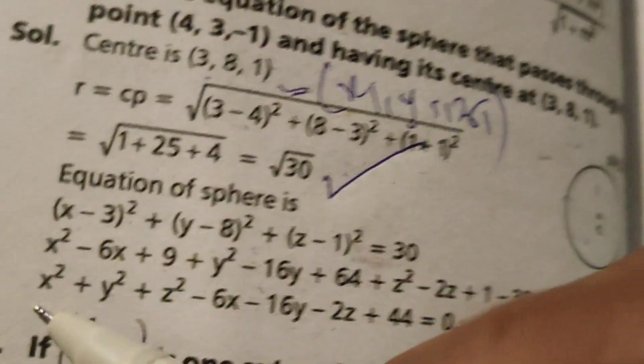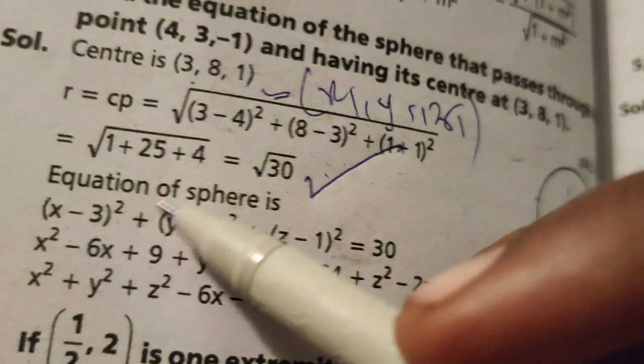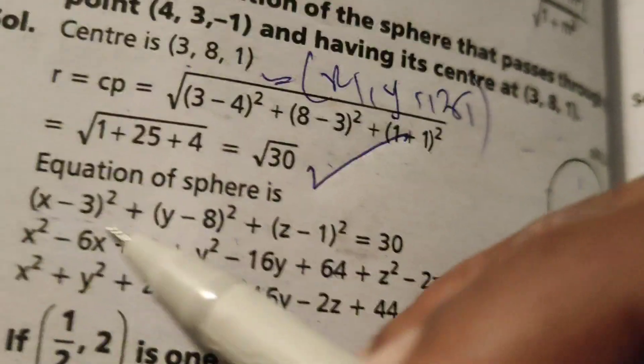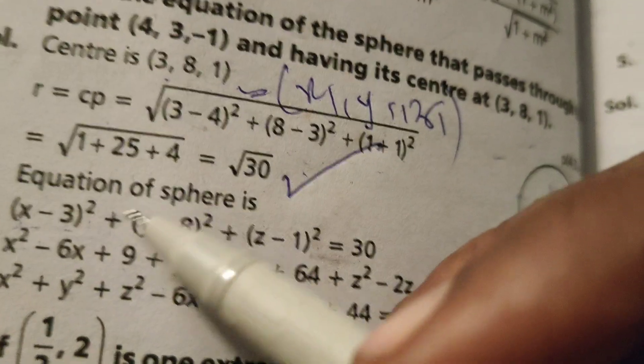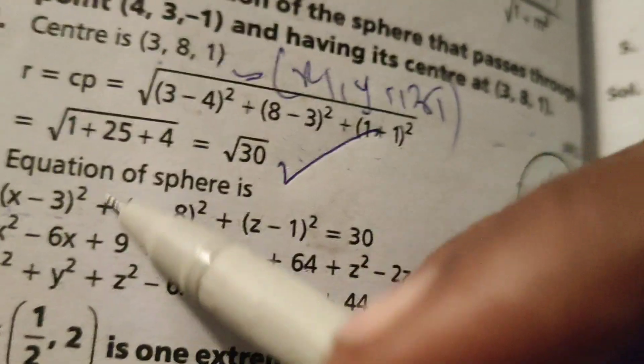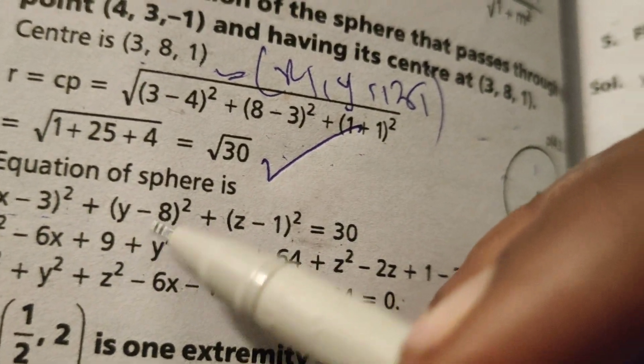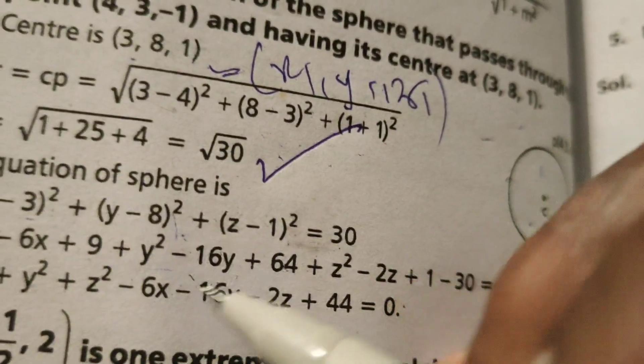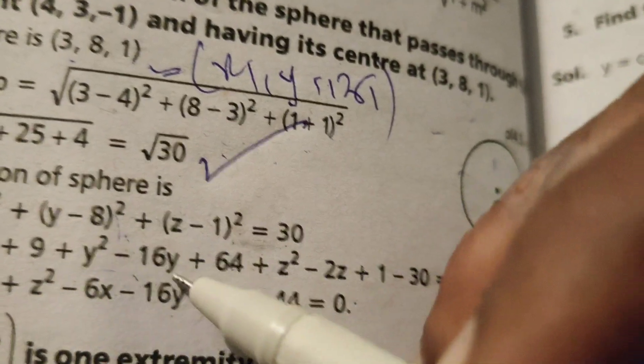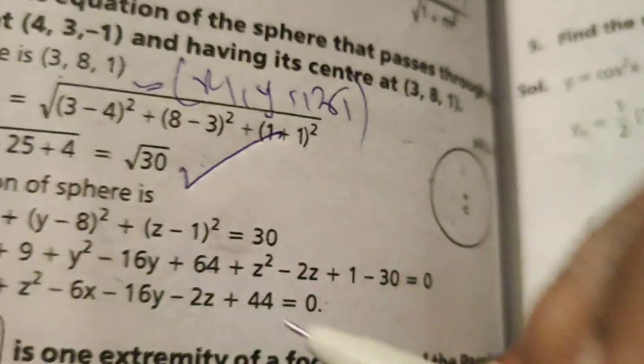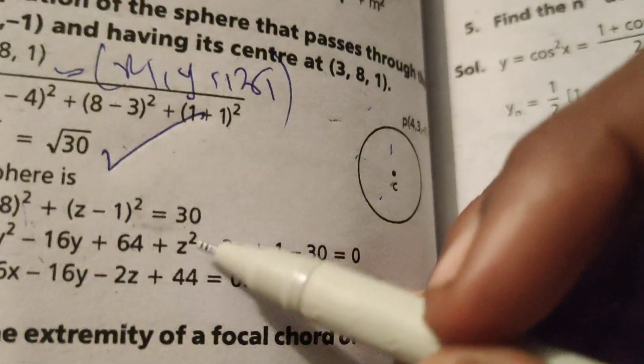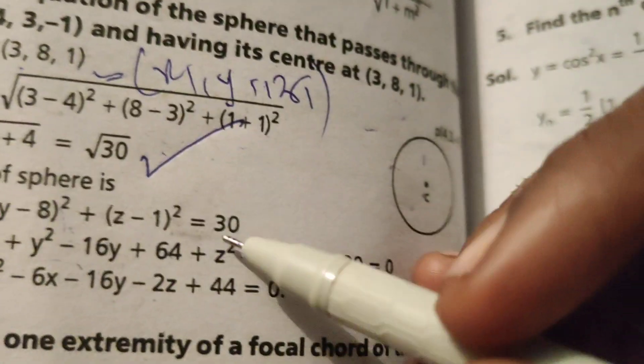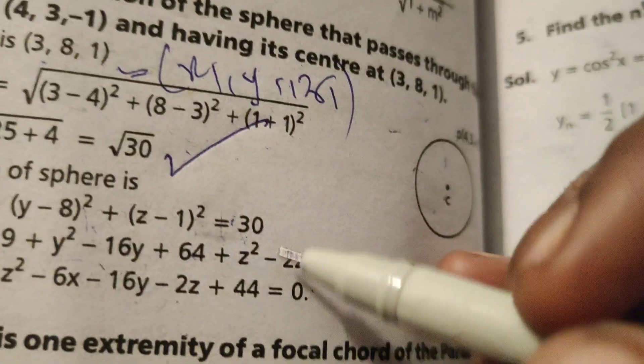Substitute here using the (a-b)² formula. Expand: x²-6x+9, y²-16y+64, z²-2z+1. The equation becomes x²-6x+9 + y²-16y+64 + z²-2z+1 = 30.